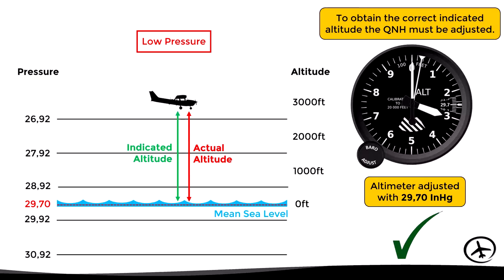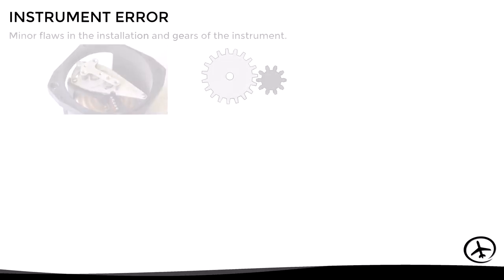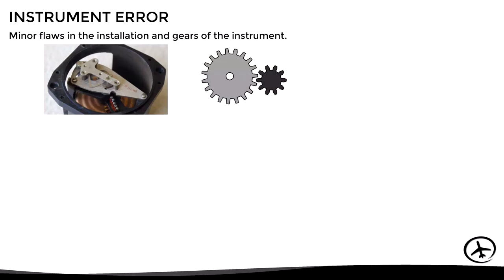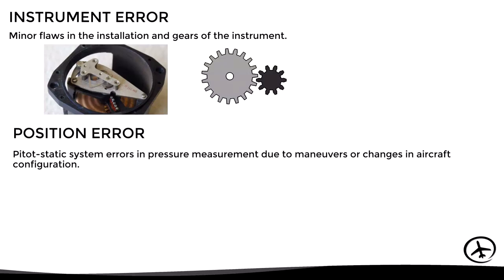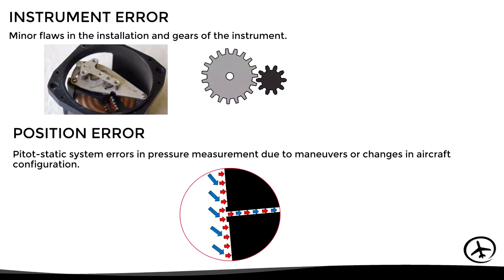However, the problem is that altimeters are not perfect. They suffer from instrument error, which is caused by wear of the gears and mechanical imperfections. There is also position error, which is caused by pitot-static system errors in pressure measurement due to maneuvers or changes in aircraft configuration, which we have already discussed in detail in the video about the pitot-static system.